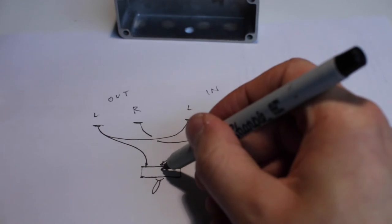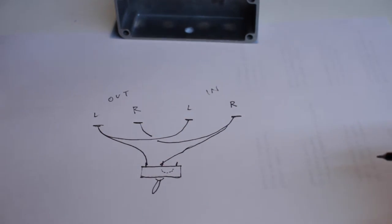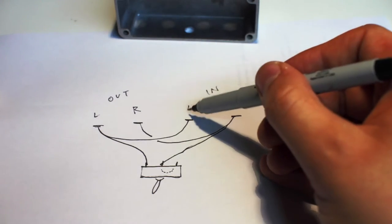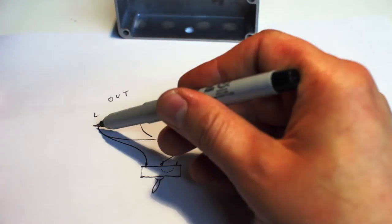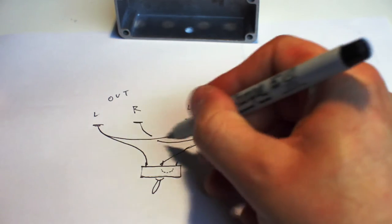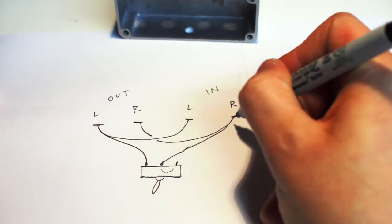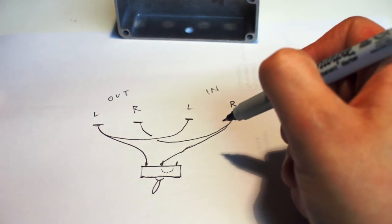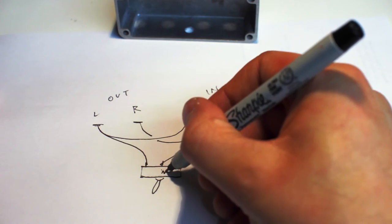So, let's see. When the switch is thrown this way, with these two terminals connected, the left comes in, goes to left out, and this wire doesn't go anywhere else. Right comes in, goes to right out, and this wire doesn't go anywhere else. So, this is stereo mode, where left and right stay separate.